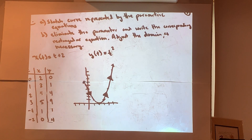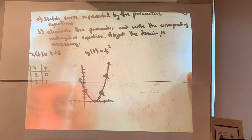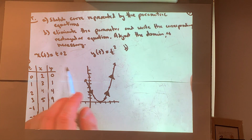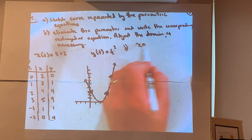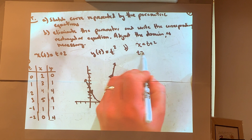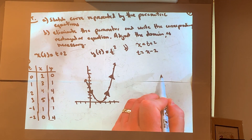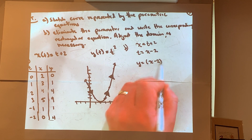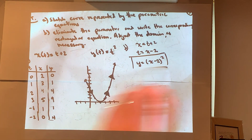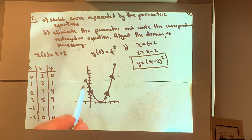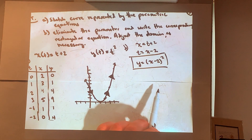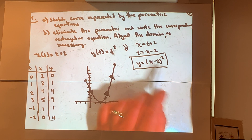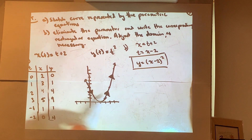Part b: eliminate the parameter. It's easiest to solve x = t + 2 for t — giving t = x − 2 — then substitute into y = t²: y = (x − 2)². That is our rectangular equation. It's the parent function x² shifted two units to the right, which matches exactly what we graphed.